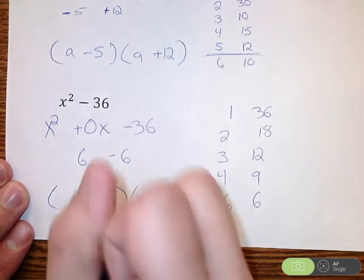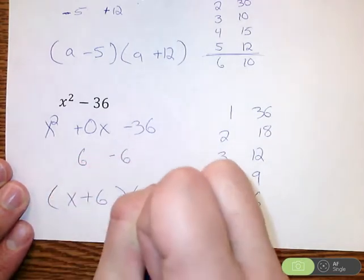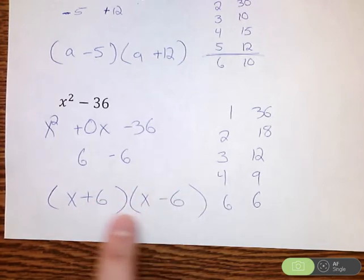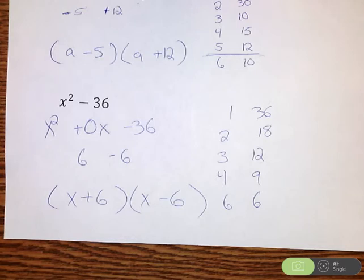So my factors are going to be x plus 6 and x minus 6. Again, if I want to check this work, I could distribute this all out, combine like terms, and I will get x squared minus 36.